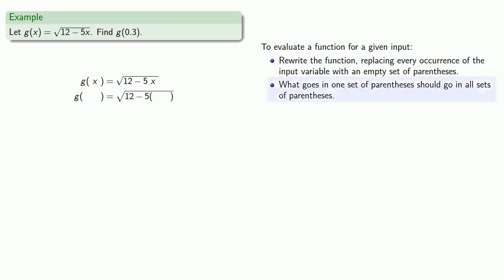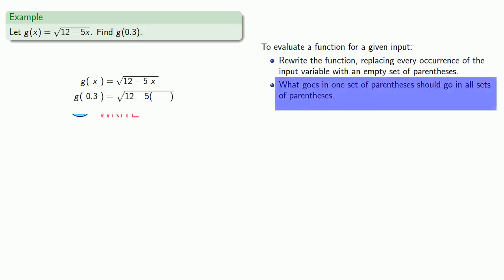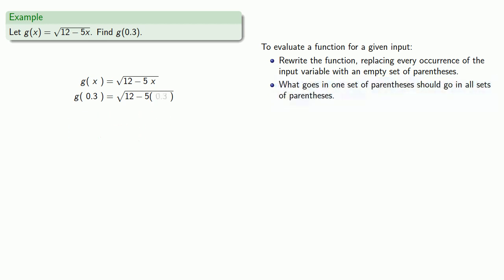What goes in one must go in all. We want a 0.3 in this first set of parentheses, so we'll write it. And we've got to put a 0.3 in all the others. And we'll finish off with some arithmetic.